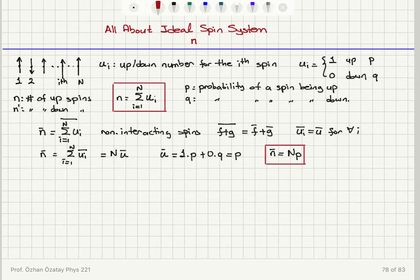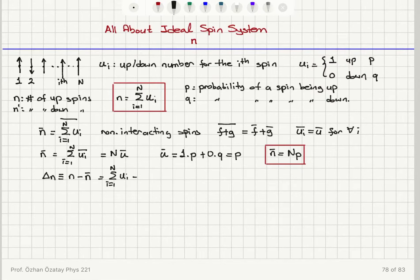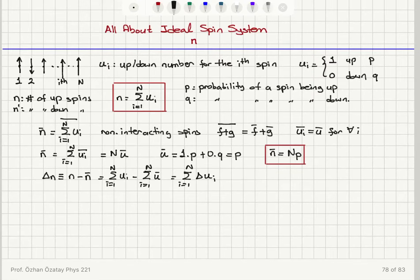This is consistent with what we found earlier. Now I'd like to find the standard deviation of n. By definition, delta n equals n minus n-bar, which is the sum from i equals 1 to N of u sub i minus the sum of u-bar. So this is just the sum from i equals 1 to N of delta u sub i. The deviation of N from its average value n-bar equals the sum of deviations of the individual up-down numbers.